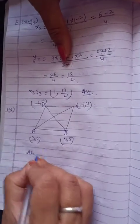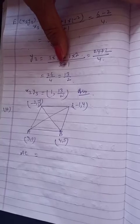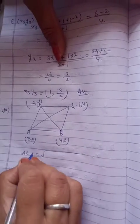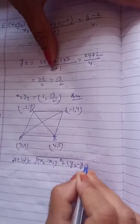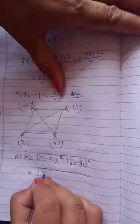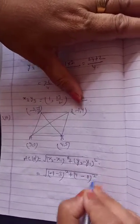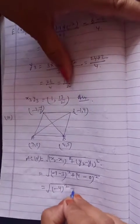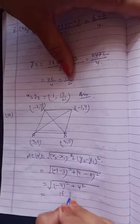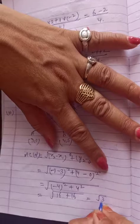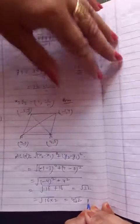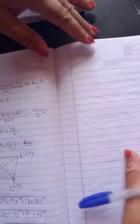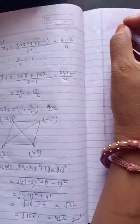सबसे पहले AC की distance find out कर लो, जो हमने 7.1 exercise में किया था - distance formula. Distance formula: √[(x2-x1)² + (y2-y1)²]. Now use it: x2 = -1, x1 = 3; y2 = 4, y1 = 0. √[(-1-3)² + (4-0)²] = √[(-4)² + 4²] = √[16 + 16] = √32 = 4√2 units.